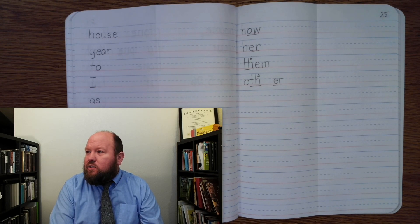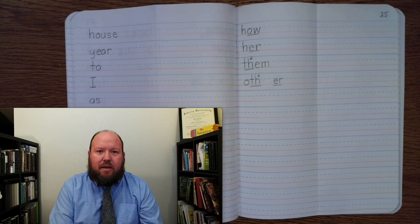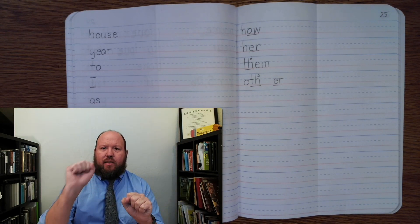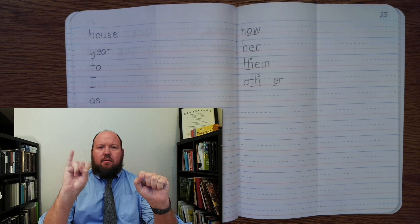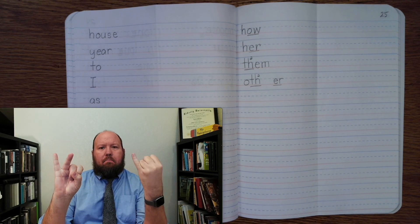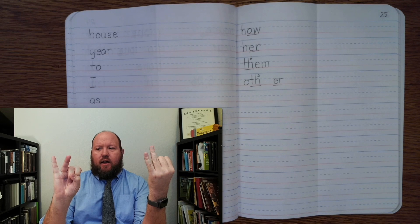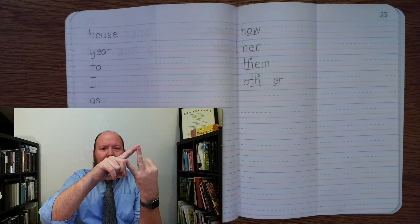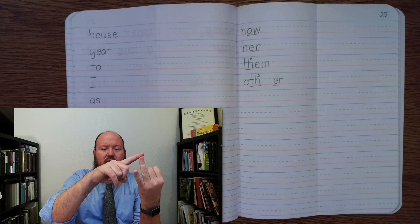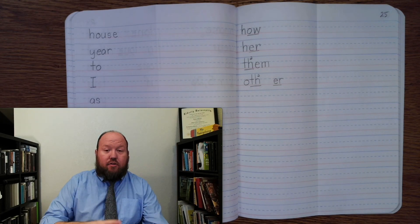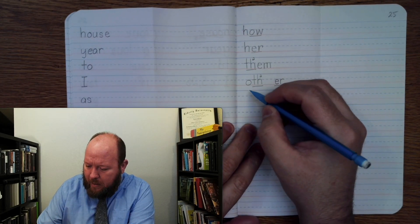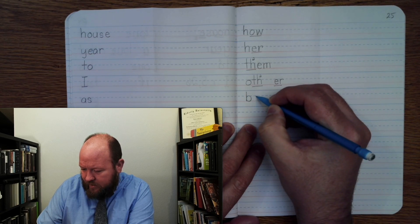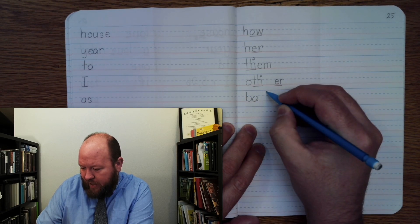The first word for today is the word baby — like, what a cute little baby, right? Baby. Bay, bit. Buh-ay, buh-it. Now here, English words can't end in an I, so what am I going to use to make this sound? A Y. Two syllables — leave a space. Bay, bit.